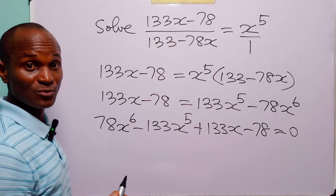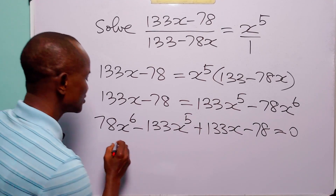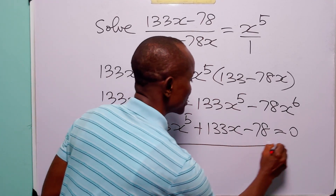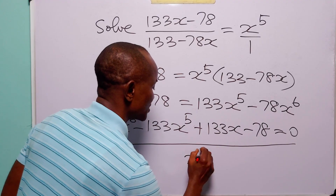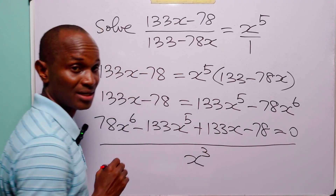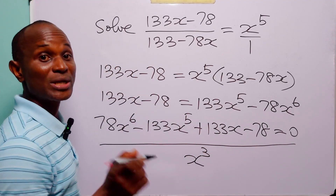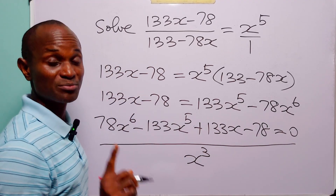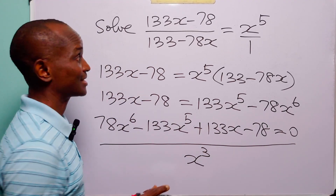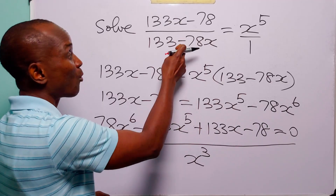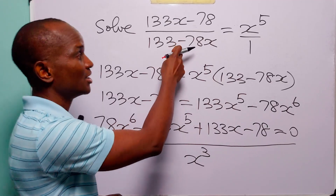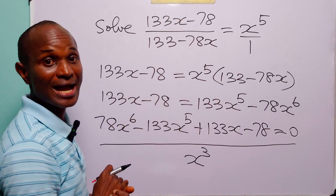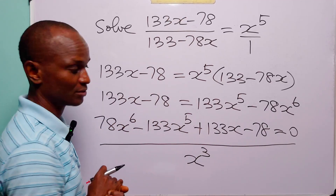The next thing we are going to do is to divide through this equation by x raised to the power 3. We are only able to do this because we know that x equal to 0 is not a root of the original equation.